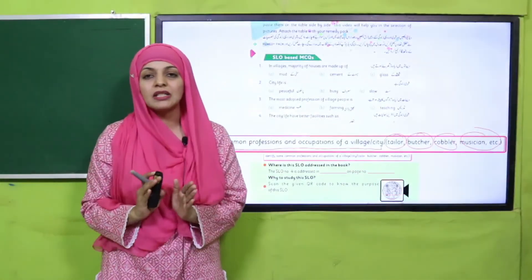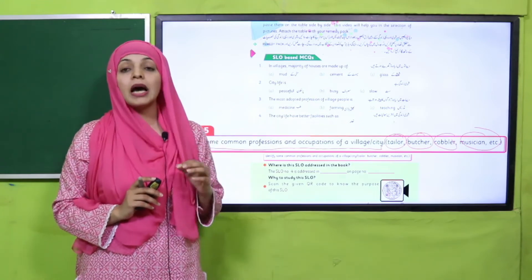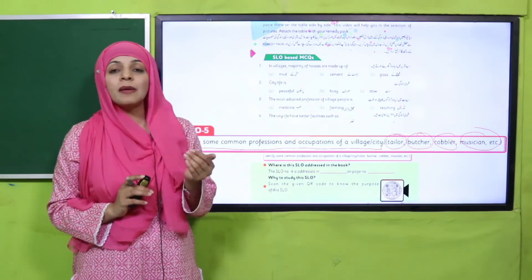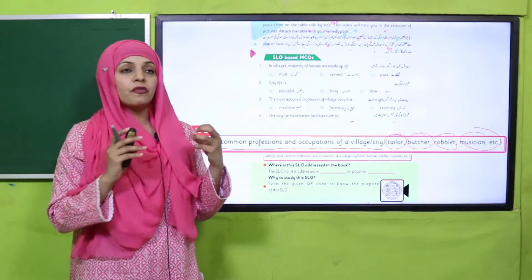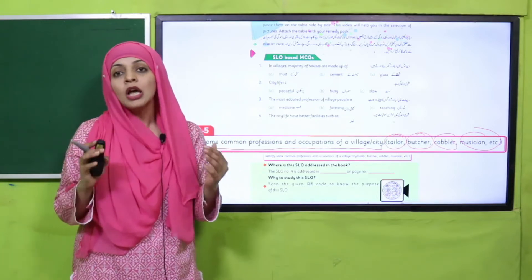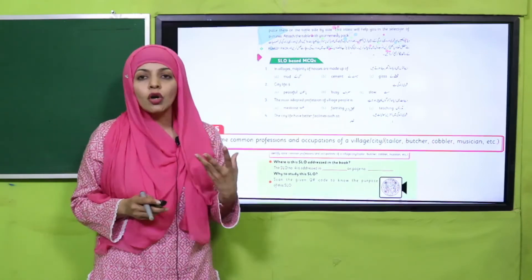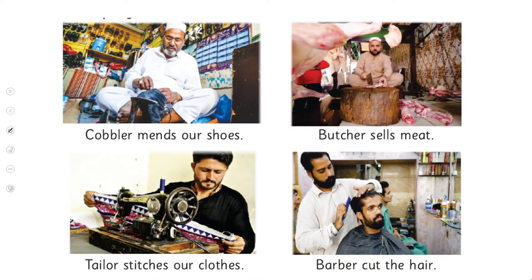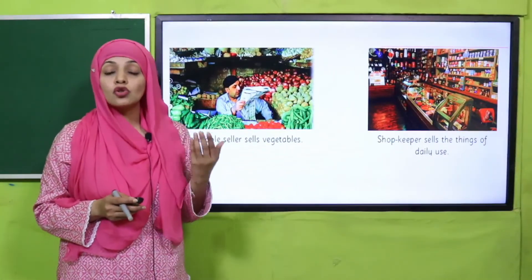We are going to study village life and city life. Some professions are common to both cities and villages. Children living in villages and cities will recognize these professions because they are very common and important. These professions include cobbler (mochi), butcher, tailor, barber, vegetable sellers, and shopkeepers — all found in both villages and cities.